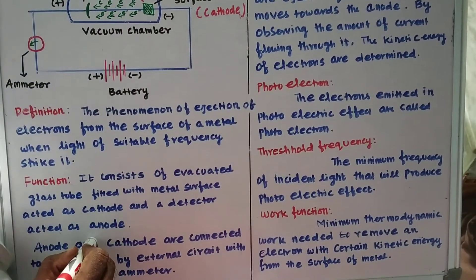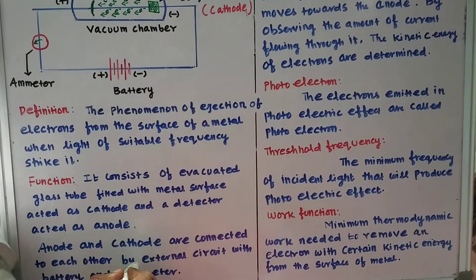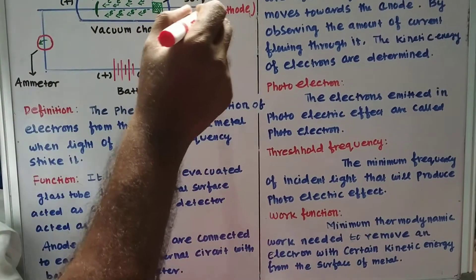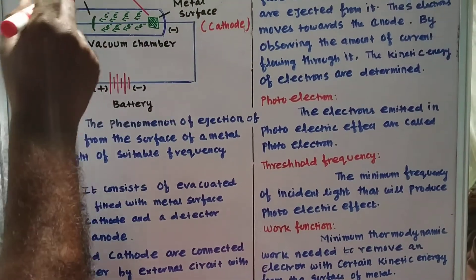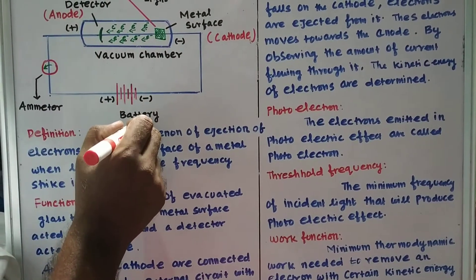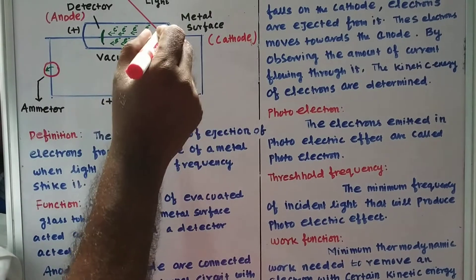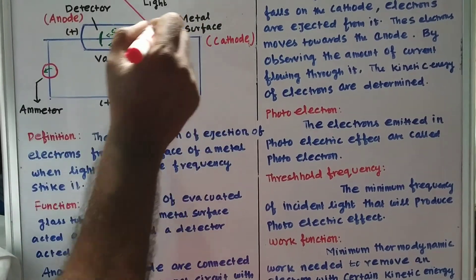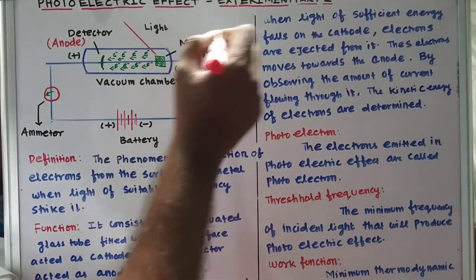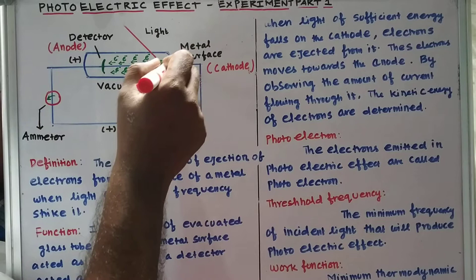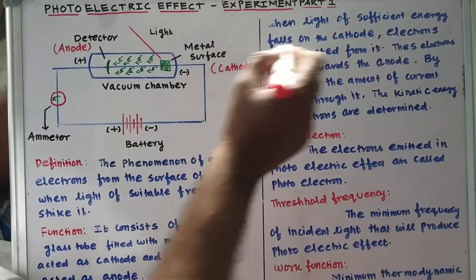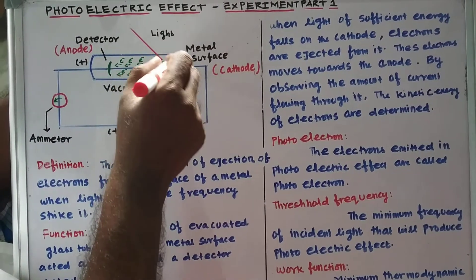The anode and cathode are connected to each other by an external circuit with a battery and an ammeter. When light of sufficient energy falls on the cathode — that is, the metal surface — electrons are ejected from it.